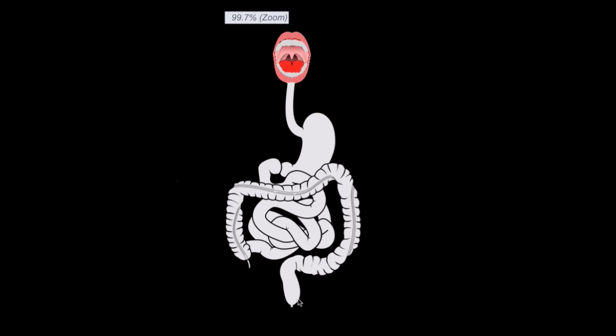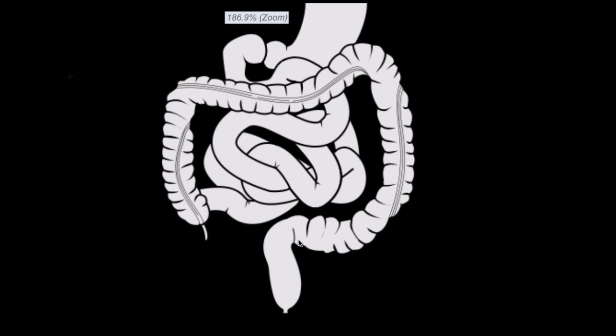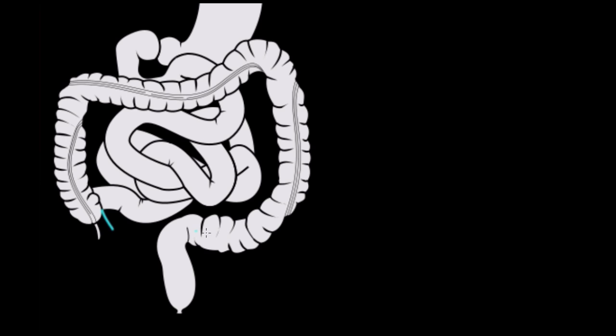Let's zoom in and focus on what happens after we absorb our food in the small intestine. Our food passes into the large intestine, as you can see here. Keep in mind, when we call it the large intestine, that does not mean it's the long intestine — in fact, it's shorter than the small intestine we just passed through. The end of the small intestine is the ileocecal valve, and that's the point where our large intestine begins.